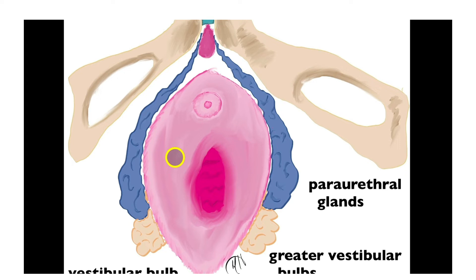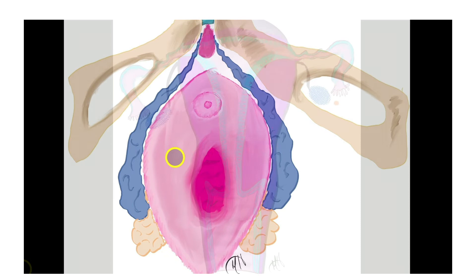These periurethral glands are homologous to the prostate gland in males — that is to say, the periurethral glands in females and the prostate gland in males derive from the same embryonic tissue.